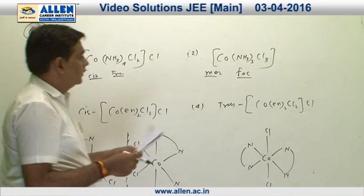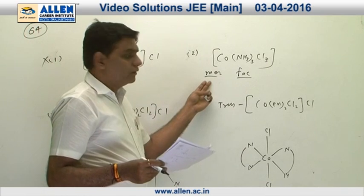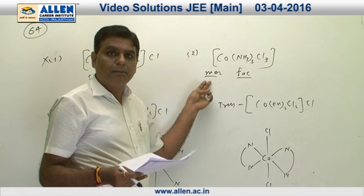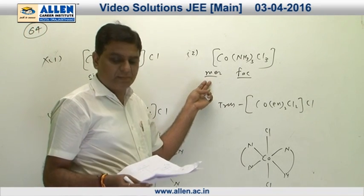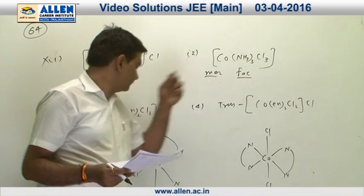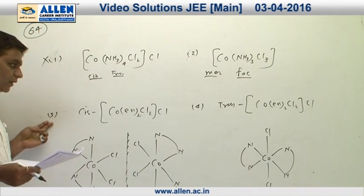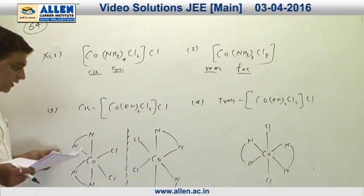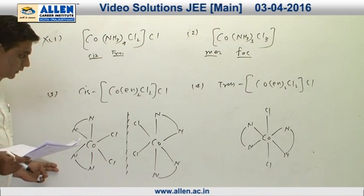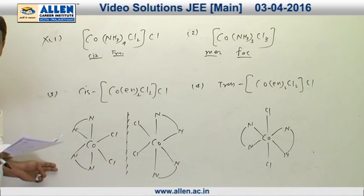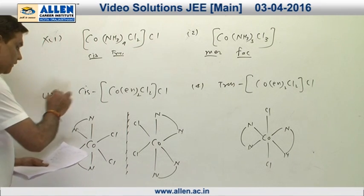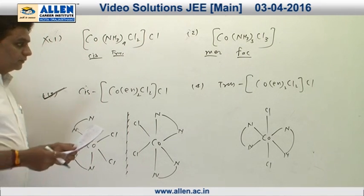Complex two has fac and mer geometrical isomers, both optically inactive due to plane of symmetry. Option C has optical isomerism because it does not have a plane of symmetry and produces non-superimposable mirror images. Option three shows optical isomerism.